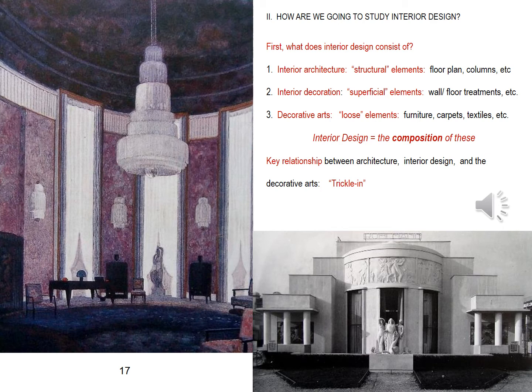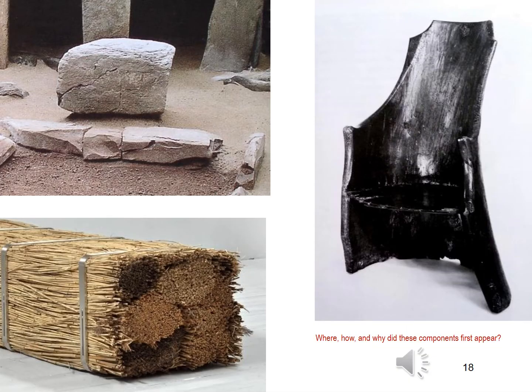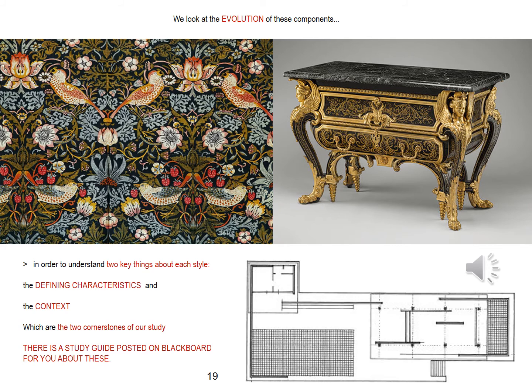Second, what I call the trickle-in relationship that exists between architecture, interior design, and the decorative arts. Often a style will begin with architecture, then spread to the interior structure, then to the loose objects in the space. And when that doesn't happen, of course it means something. We will study interior design by looking at the origins of these three components, and you now understand why it's important that we do that. Here are examples of one of the first kinds of structural supports and early furniture. Noteworthy — they are all organic. Think about what that means.